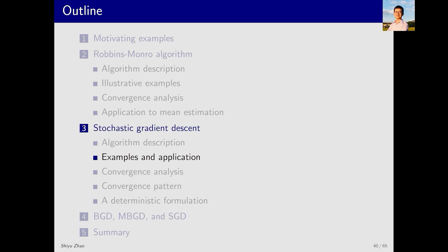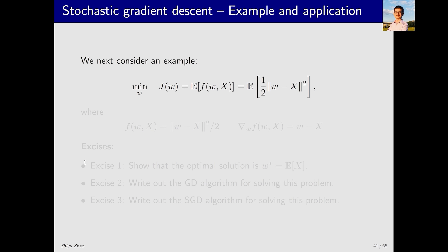Next, we use an example to demonstrate how to apply the SGD algorithm. Consider the following optimization problem. This is the objective function. This is the expectation of f(w,x). I set f to this value,